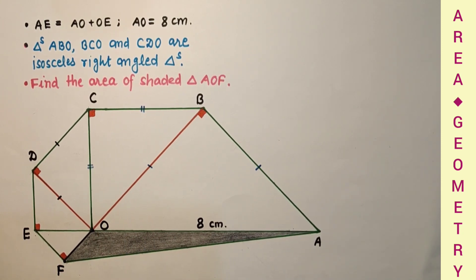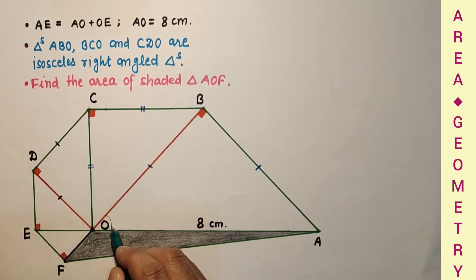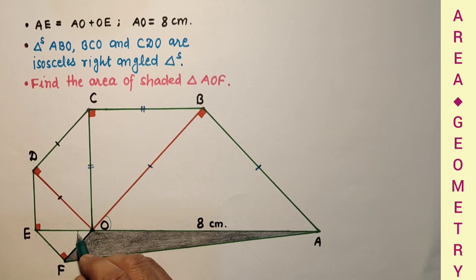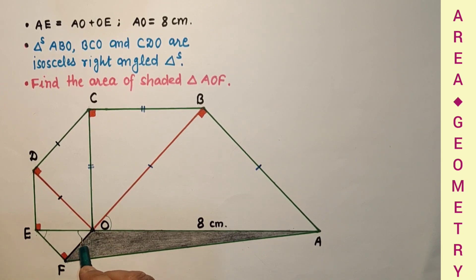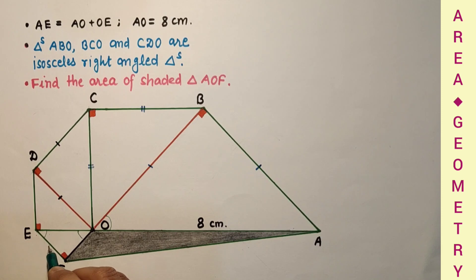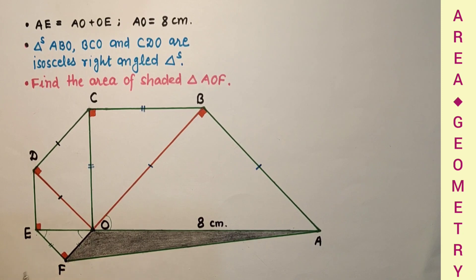Let us discuss about this question. If this angle is 45°, then the vertically opposite angle is also 45°. Since this angle is 90°, this will also be 45°. So once again this triangle is an isosceles triangle, meaning this side is equal to this side. This angle is 90° and this is 45°.